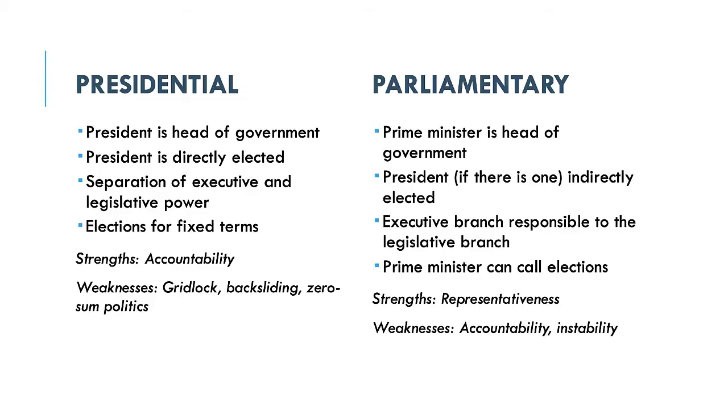Presidential and parliamentary systems each have their disadvantages. Presidential systems can be prone to gridlock and executive aggrandizement. They experience gridlock because of the separation between executive and legislative power — if they're not held by the same political party, it can be difficult to pass legislation. They are also prone to executive aggrandizement or democratic collapse because they already concentrate a significant amount of power in the hands of one person. Juan Linz, in his famous article called 'The Perils of Presidentialism,' noted that presidential systems can be prone to collapse because electing a single person tends to portray politics as a zero-sum game — you either win everything when you win the presidency or you lose everything.